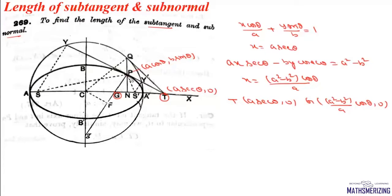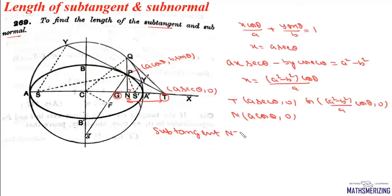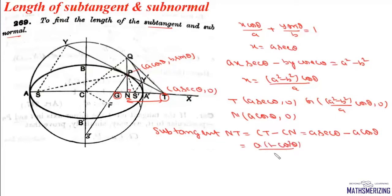If we drop a perpendicular from P on the axis, the coordinate of point N is (a cosθ, 0). The length of sub-tangent NT equals CT minus CN, where CT = a secθ and CN = a cosθ. Taking a common, we get a(1 − cos²θ) / cosθ, which simplifies to a sin²θ / cosθ.